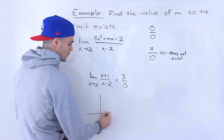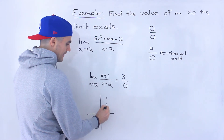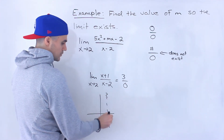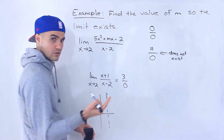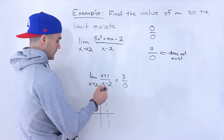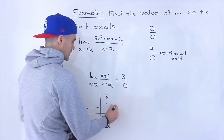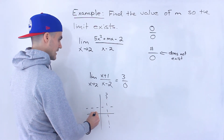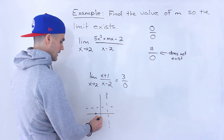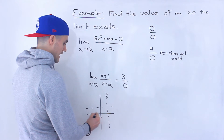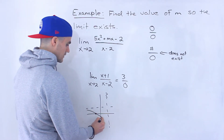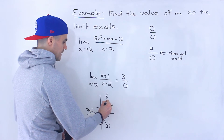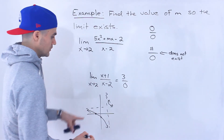If you were to graph this, at that x value of 2 there would be a vertical asymptote, and there would also be a horizontal asymptote. At x = −1 there would be a y-intercept at −1/2. So it looks something like that — that's how this graph would look.